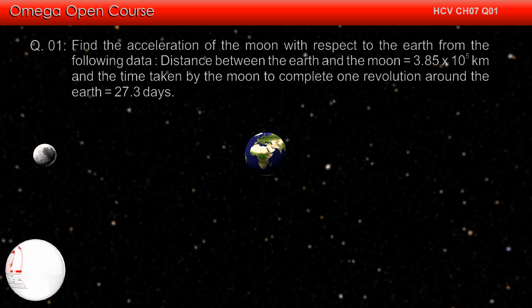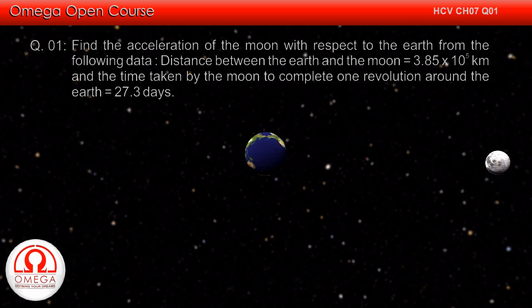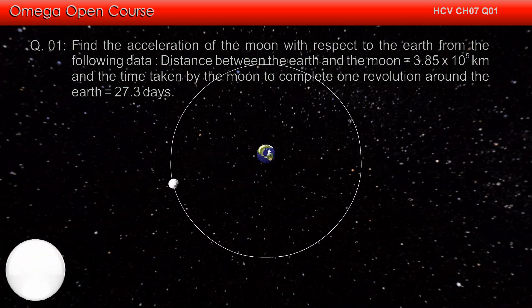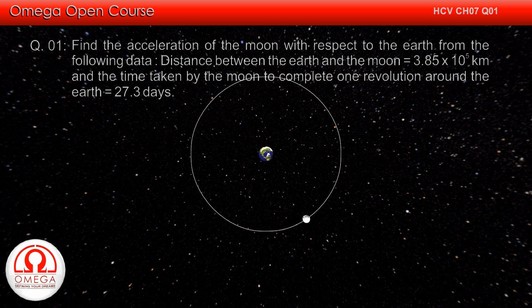Find the acceleration of the Moon with respect to the Earth from the following data. Distance between the Earth and the Moon is equal to 3.85 into 10 to the power 5 km and the time taken by Moon to complete one revolution around the Earth is equal to 27.3 days.